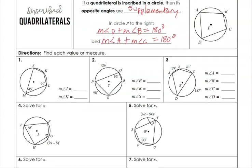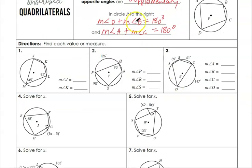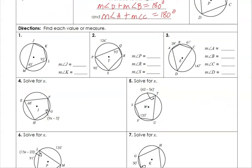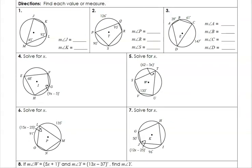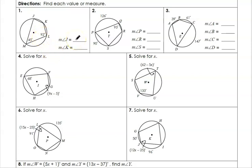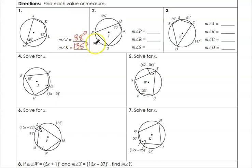Let's find the measurement of angle J. J and L are opposite each other in the inscribed quadrilateral, so they are supplementary. 180 minus 92 gives angle J equals 88 degrees. And for angle K, 180 minus 45 gives 135 degrees.